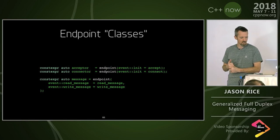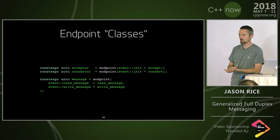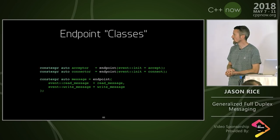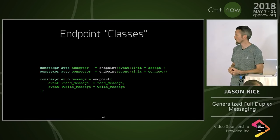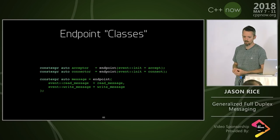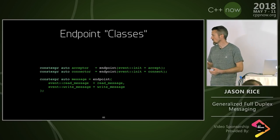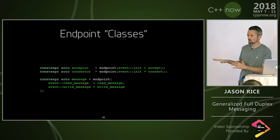These endpoint classes take events like init, read_message, or write_message, and you can compose them together. In the case of acceptor or connector, this is part of the init event — when you create this endpoint object, the first thing you want to do is either accept or connect the connection. In the case of actually sending and receiving messages, you could just give it whatever. This is just the basic semantics of it.